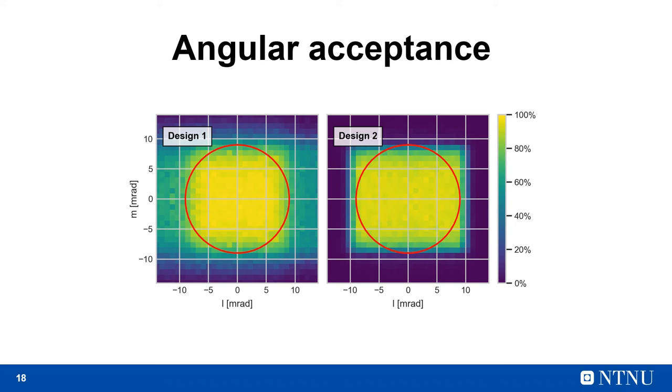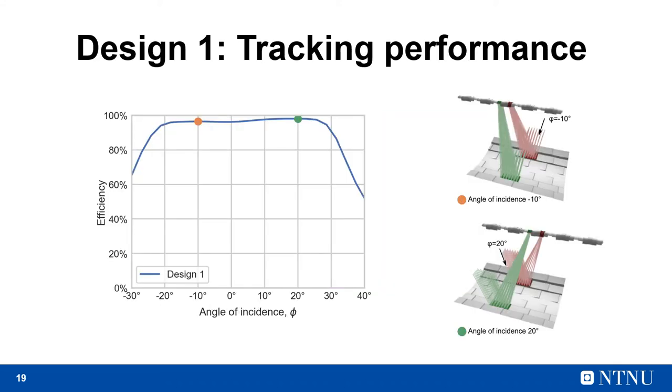The first design does tracking integration by translating the secondary reflector as I showed you previously, and here we can see the range of this tracking. The design has high efficiency from around negative 20 degrees up to around plus 30 degrees. This range is slightly asymmetrical, and that's because the angular distribution seen by the concentrator is also asymmetrical, at least when the concentrator is not installed exactly at the equator.